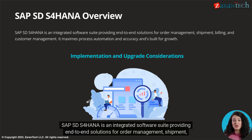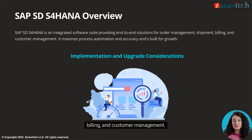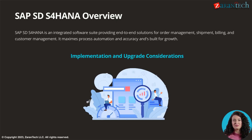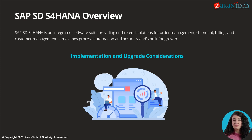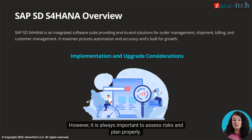SAP S/4 HANA is an integrated software suite providing end-to-end solutions for order management, shipment, billing, and customer management. It maximizes process automation and accuracy and is built for growth. The implementation of SAP S/4 HANA can be a self-service or a fully managed implementation project. Upgrades are also manageable; however, it is always important to assess risks and plan properly.